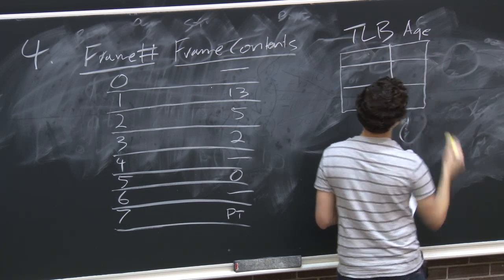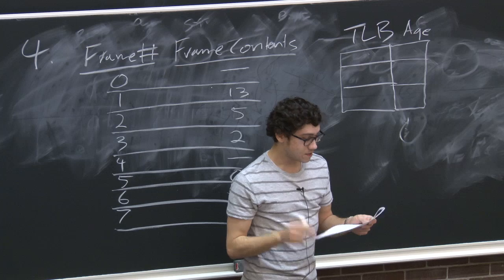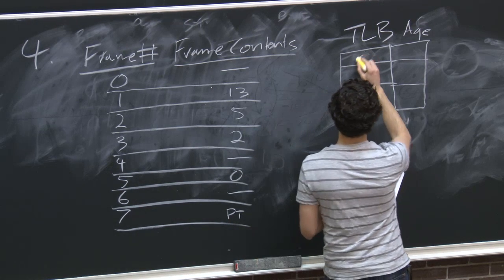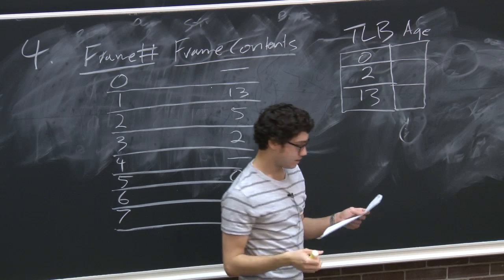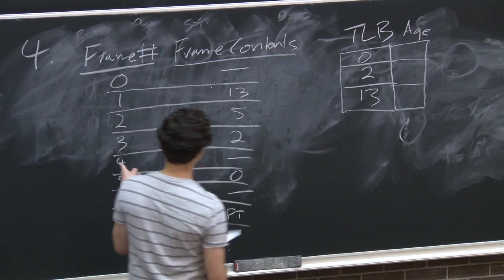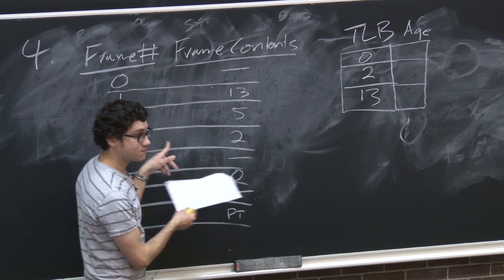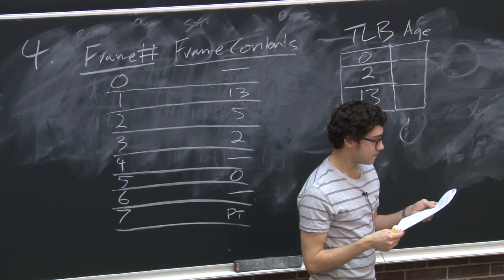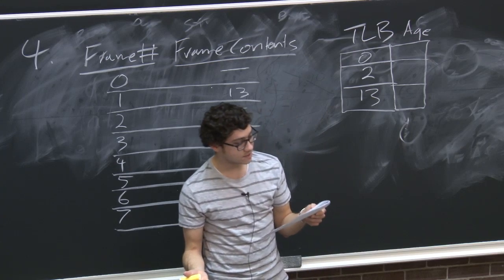We have a three-entry translation look-aside buffer using least recently used replacement. The TLB contains entries for virtual page numbers 0, 2, and 13 — these make sense because these pages are mapped in physical memory. The question asks us to circle references that generate a TLB hit and put a rectangle around those that generate a page fault.